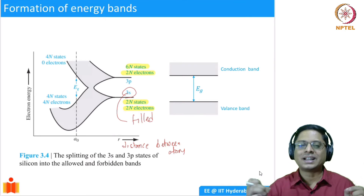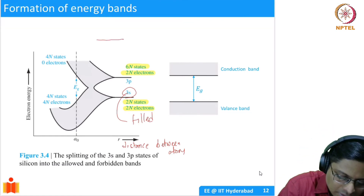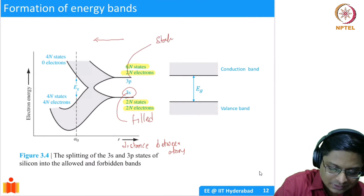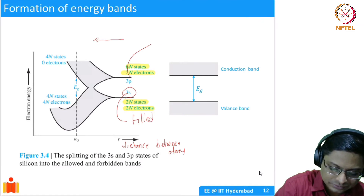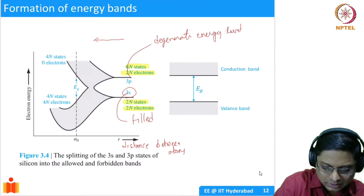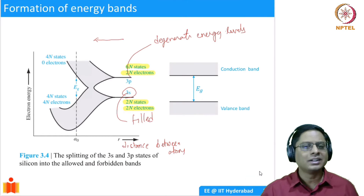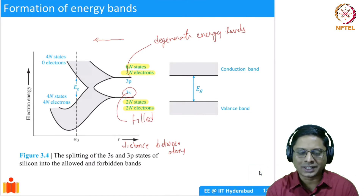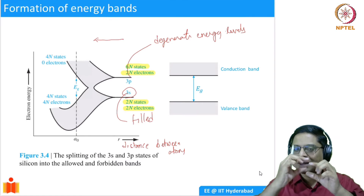As you bring the atoms closer and reduce r, all these states are actually degenerate — they have the same energy because the interactions are not there when atoms are very far apart. But the moment you start reducing the distance between the atoms, you saw that as you bring the potential wells closer and closer, there is a lifting of degeneracy and a small gap delta E is appearing.